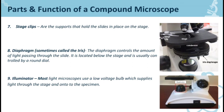Number seven is the stage clips. These are the supports that hold the slides in place on the stage. Makikita natin na doon sa ibabaw ng stage, meron syang clip na parang silver — tapos doon natin i-clip yung lens na nandun mismo yung object na gagamitin natin to see doon sa may mismong eyepiece.